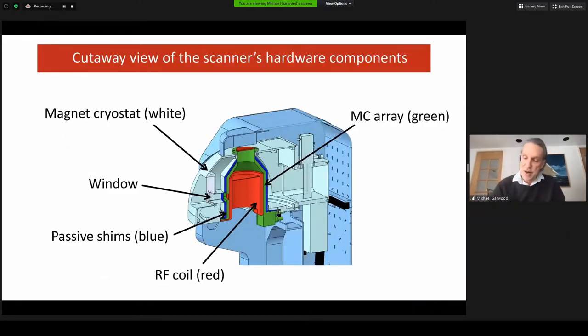In this cutaway view of the scanner, I'd like to draw your attention to another innovative hardware component indicated in green which is a multi-coil or MC array used both for improving field uniformity and for spatial encoding the MRI signals. The MC array serves the role of both shim coils and gradient coils that exist in standard MRI scanners, but the MC array provides greater flexibility for dynamically shaping the magnetic field.